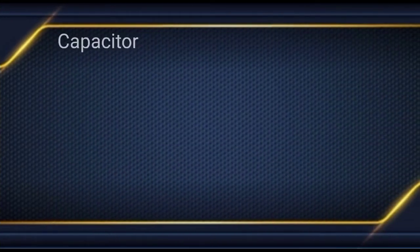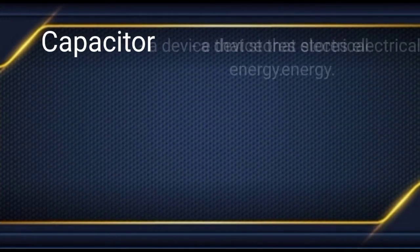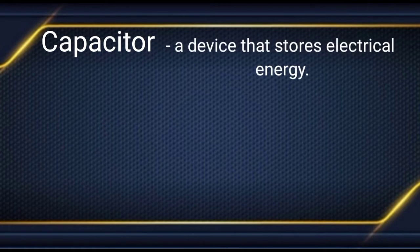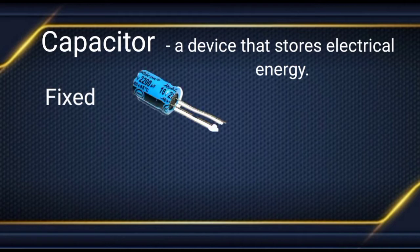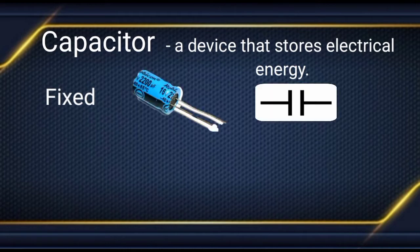Next, we have the capacitor — a device that stores electrical energy. A capacitor also has two types. First is the fixed capacitor, and this is the actual appearance and the symbol.